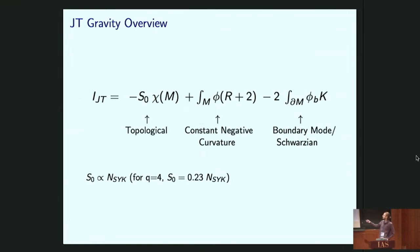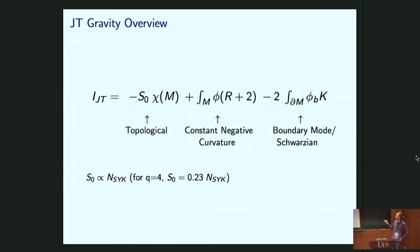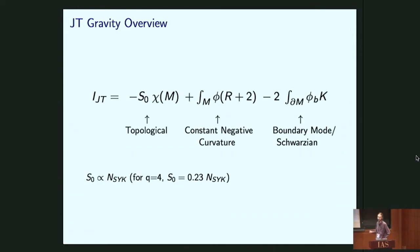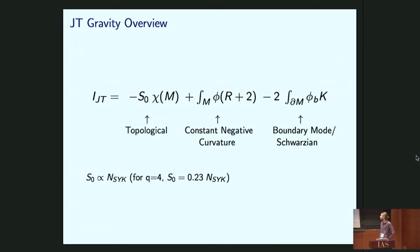Here I've written the action for JT gravity schematically with three parts. The first is a topological term: S0, the zero-temperature entropy, times the Euler characteristic of the manifold. When you get JT gravity from SYK, S0 is proportional to N of SYK, so we think of S0 as something pretty large. The middle term, upon integrating over the dilaton, enforces constant negative curvature — one of the great simplifying features of JT gravity. The last piece involves the extrinsic curvature of the boundary and the dilaton along the boundary, leading to the Schwarzian theory.